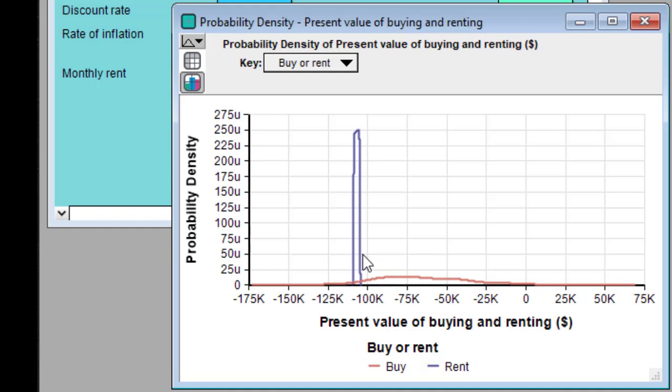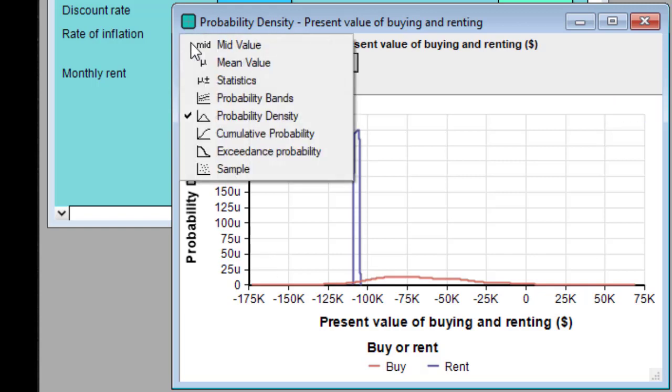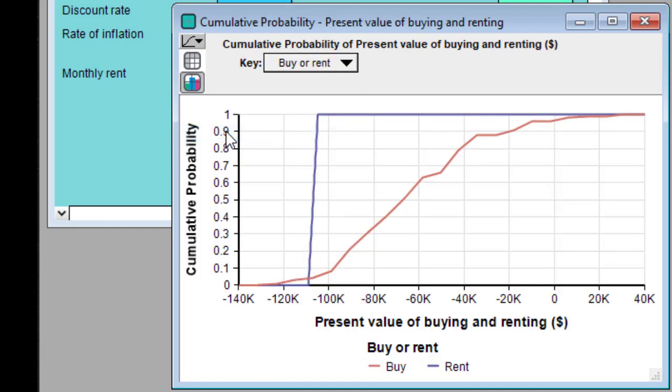There are several ways to visualize uncertainty, and we're going to explore several of those views. Up here at the top corner is the uncertainty view pop-up menu. Right now, we have the probability density selected. I'm going to go ahead and select cumulative probability. Again, we have the two curves. The red is buying and blue is renting.